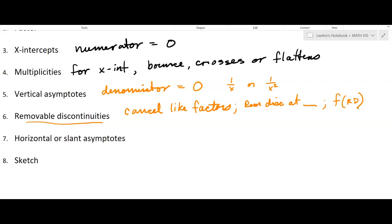And then you're going to look at the horizontal or slant asymptotes, and that goes by the degrees of the numerator and the denominator. And you have the three cases.